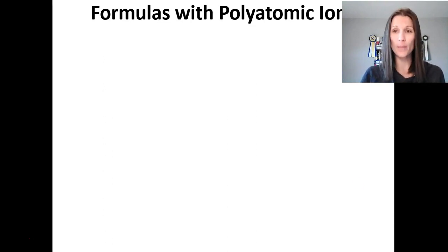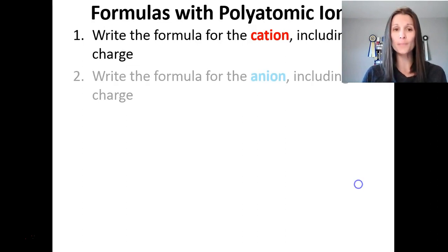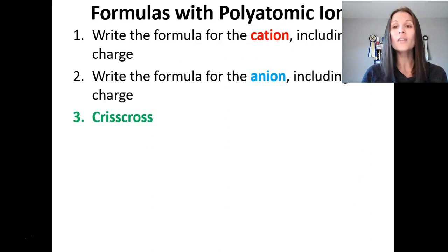What about formulas with polyatomic ions? You write the formula of the cation, including the charge. Then you write the formula of the ion, including the charge. Follow the same criss-cross rule. However, when you criss-cross, that number that you're bringing down applies to the entire polyatomic ion. Every atom within that polyatomic ion will be multiplied by that number. You reduce the subscripts.